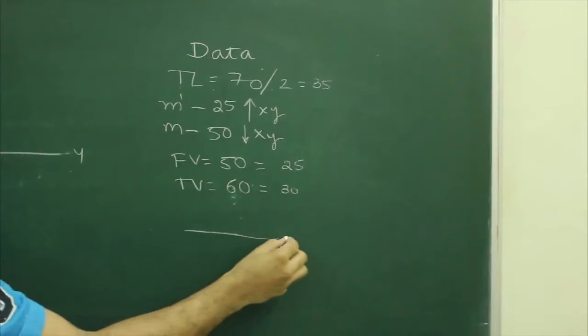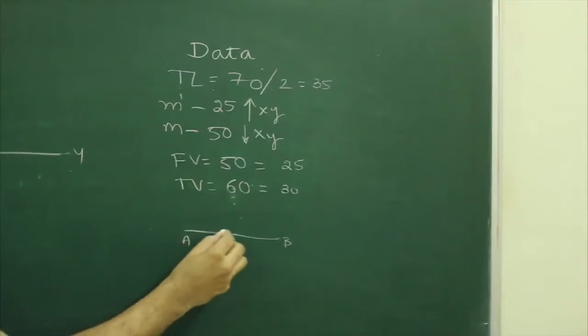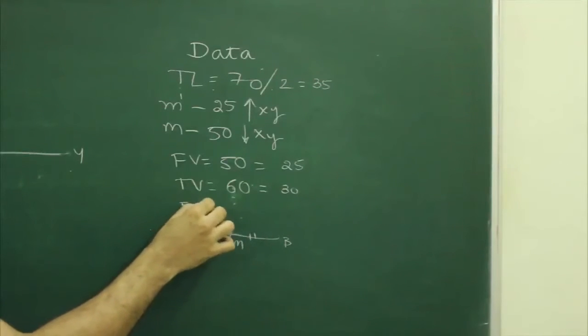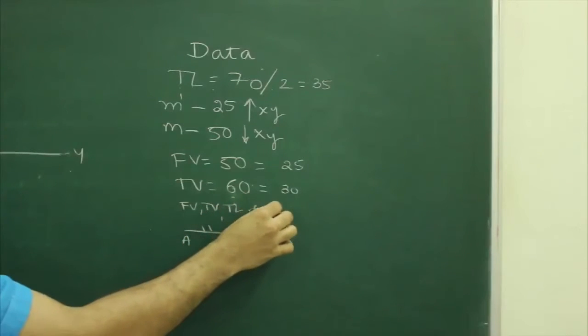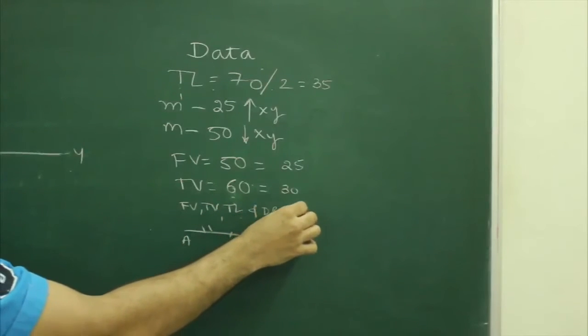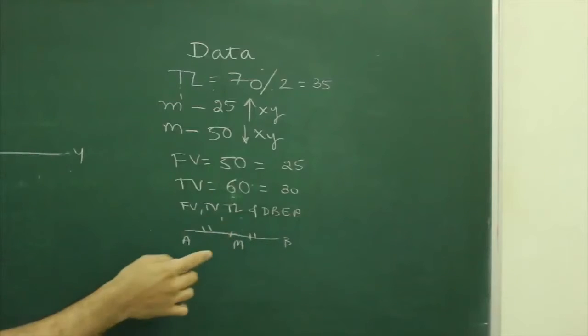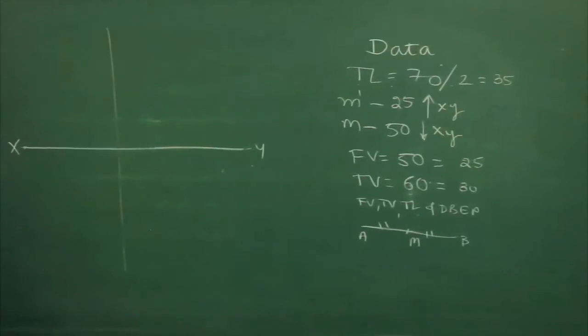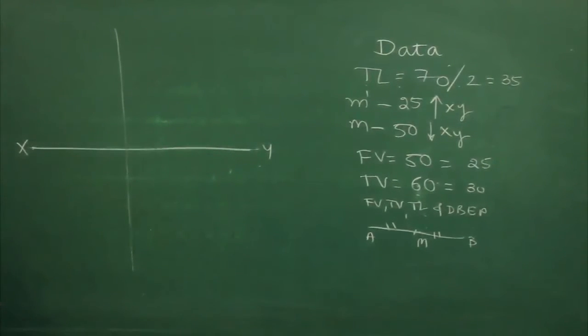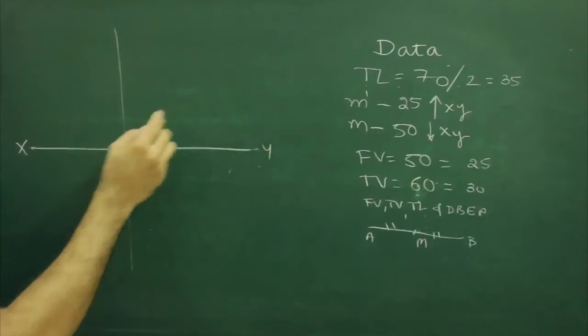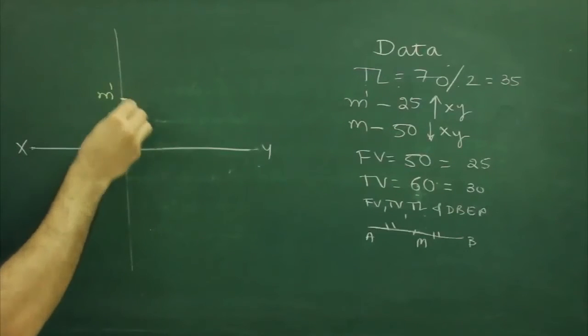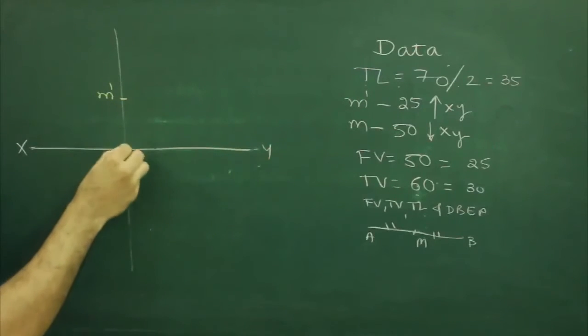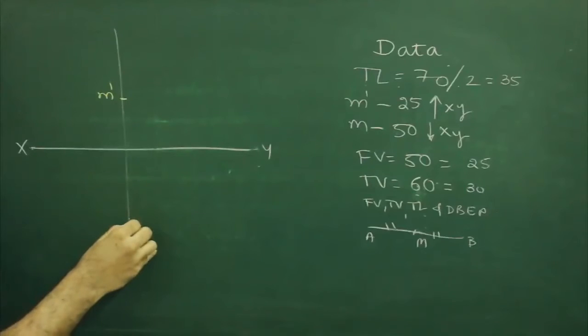So if this is your line AB, then midpoint M will divide everything - front view, top view, true length - everything into half. Now we will take m dash 25 mm above xy line. We will mark m dash 25 mm above xy line and m 50 mm below xy line.